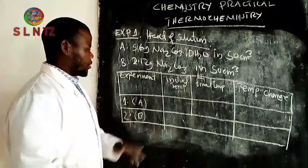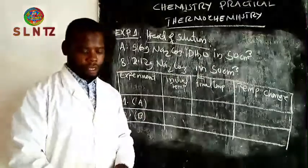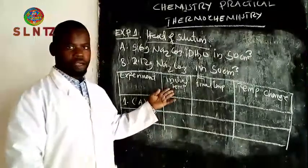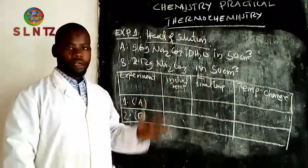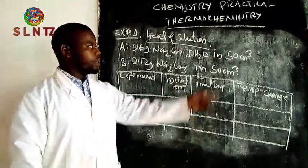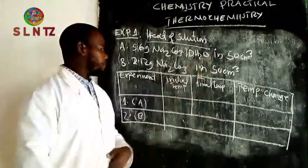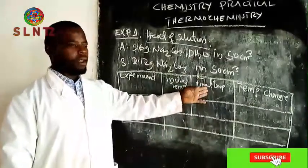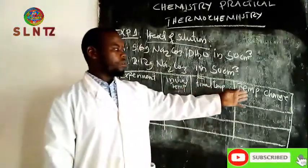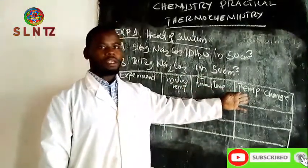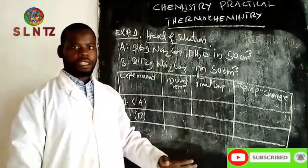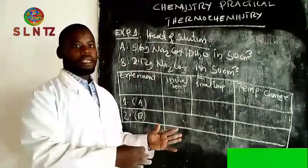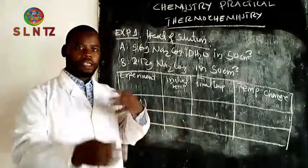This is our table for the procedure. It means we are going to record the initial temperature, then we dissolve the sample, and we are going to record the final temperature and then the temperature change. That is the first procedure before reaching the questions.